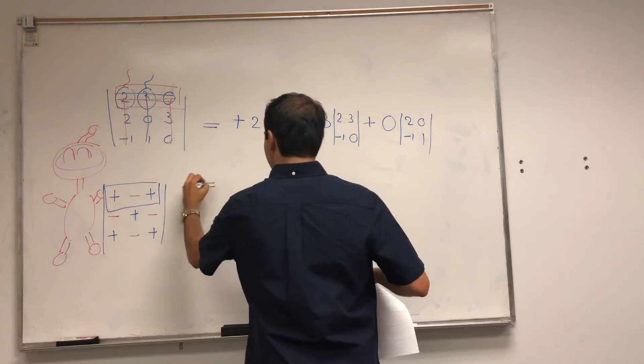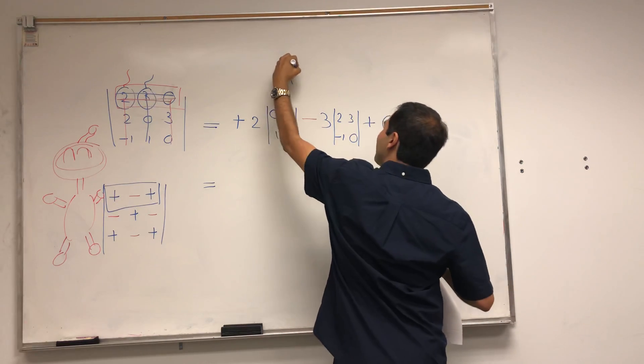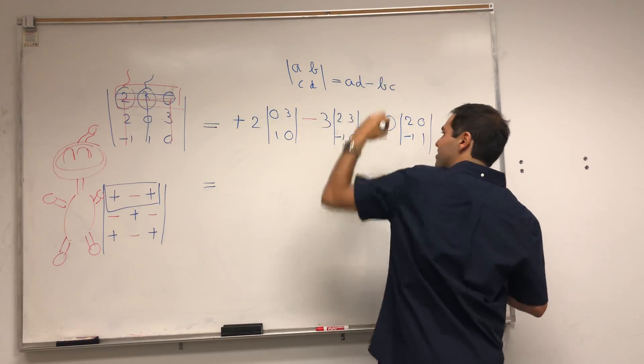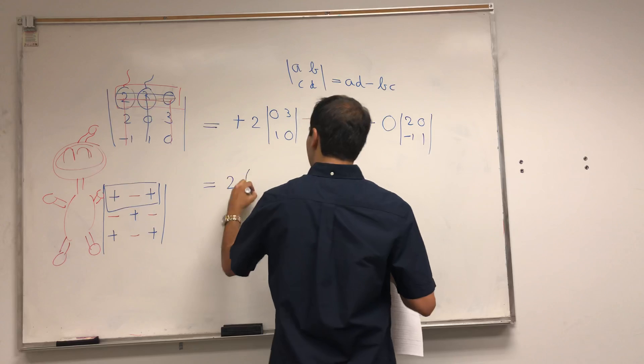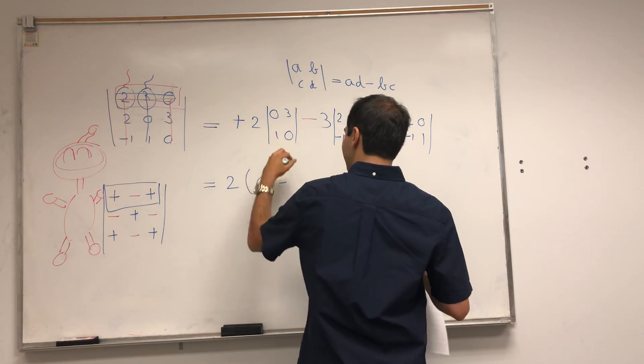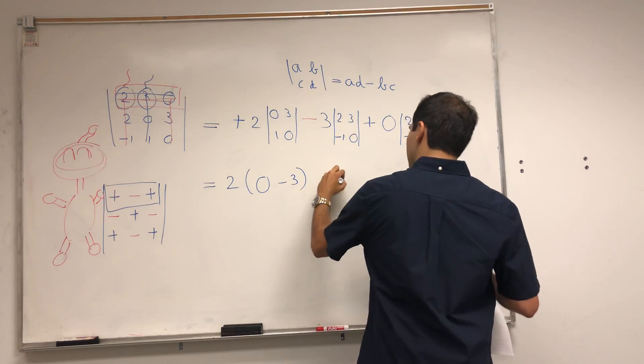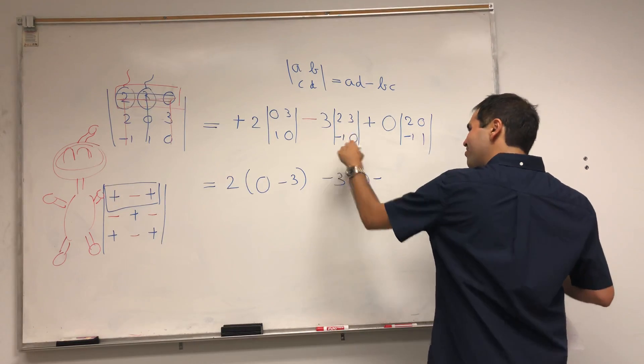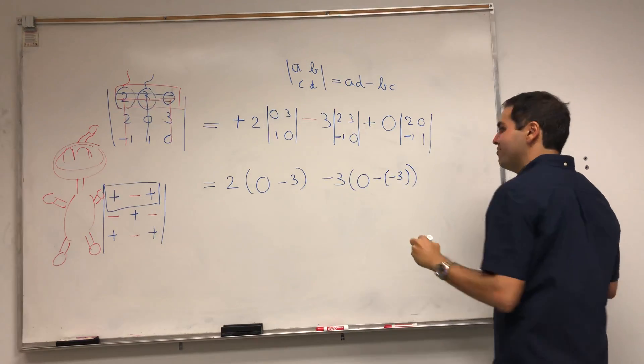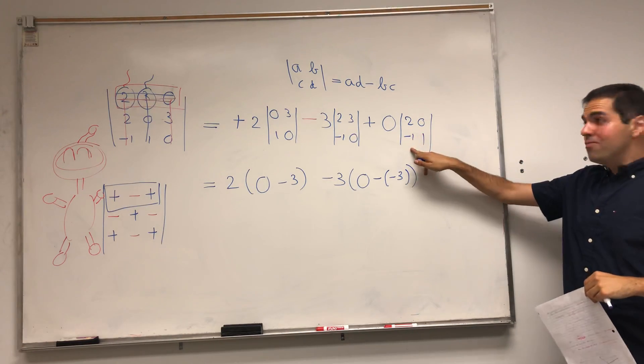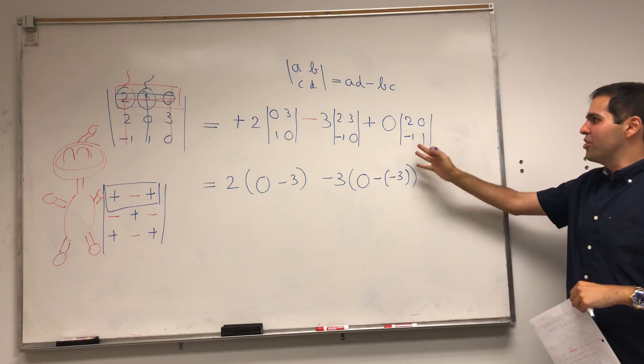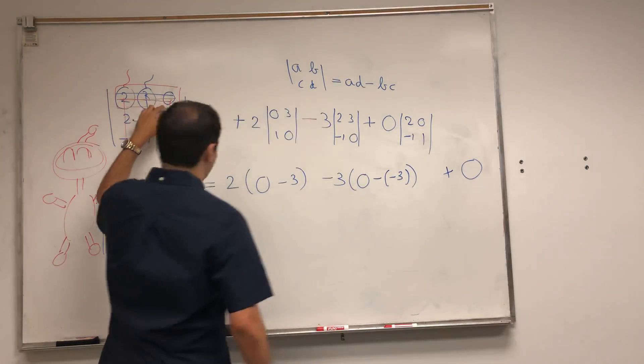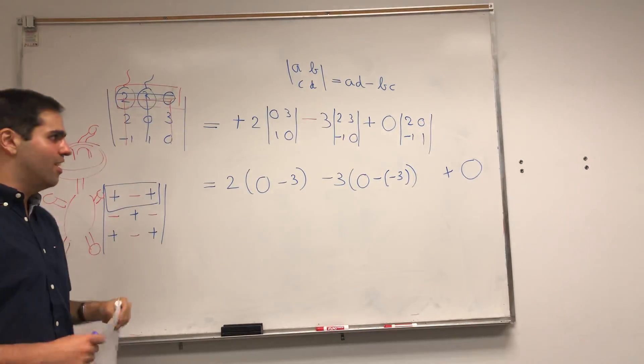And then you just evaluate those determinants. You could do Bomberman again, but for two by two, it's easier just saying that the determinant is ad minus bc. So here it's two times zero, which is zero, minus three times one, which is minus three. And then minus three times two times zero minus three times minus one, which is minus three. And what about the zero? Notice we don't even have to evaluate this determinant because it's zero times something. And this is why zeros are very useful for determinants. They actually save us a lot of work.